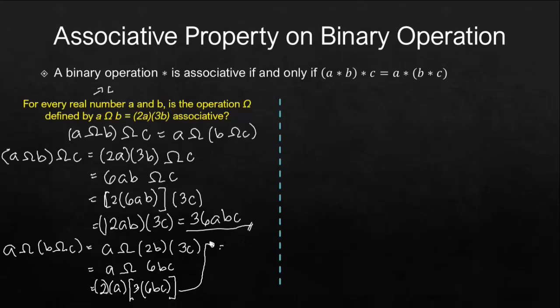2 times A is 2A. 3 times 6 is 18BC. Let's multiply. 2 times 18 is 36. A times B times C is ABC. Notice that we arrived with the same answer just like the left side in the equation. So we have proved this, meaning the two sides are really equal to each other. And the answer for here is yes, they are commutative. You can write it as a conclusion. Therefore omega is associated on real numbers.